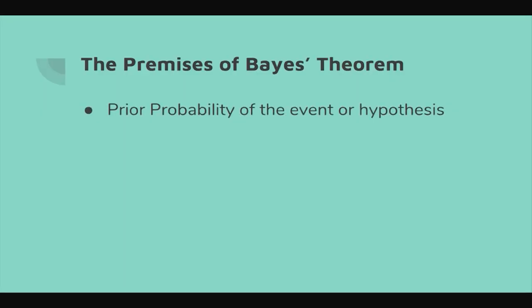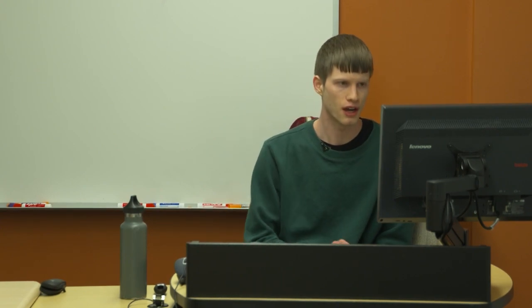So what are the premises of Bayes' theorem? There are three probabilities you need to come up with. First, the prior probability of the hypothesis — just based on background knowledge, how likely or typical is this hypothesis? That's often the most difficult part. Second, the likelihood of the hypothesis under the evidence — does this new information fit your theory well? Third, the likelihood of all competing hypotheses under the evidence — does the new information fit an alternative theory better? One common misconception is that those two likelihoods have to add up to 100%. They don't — they're not complements.